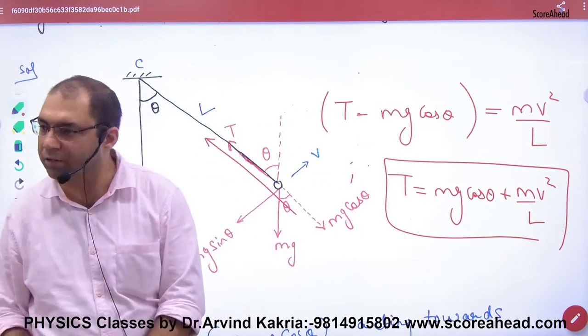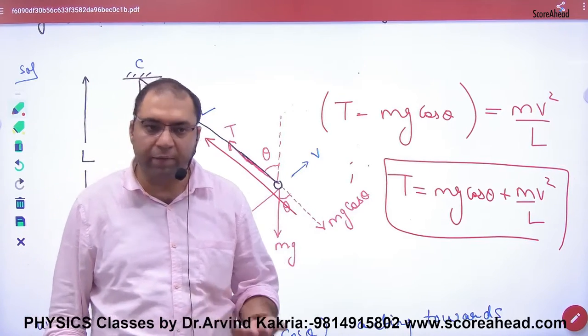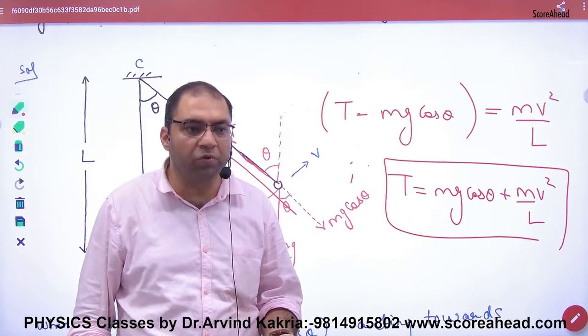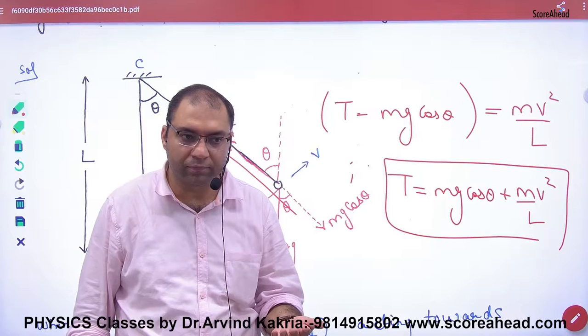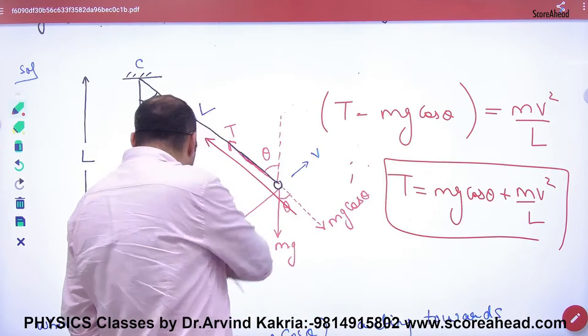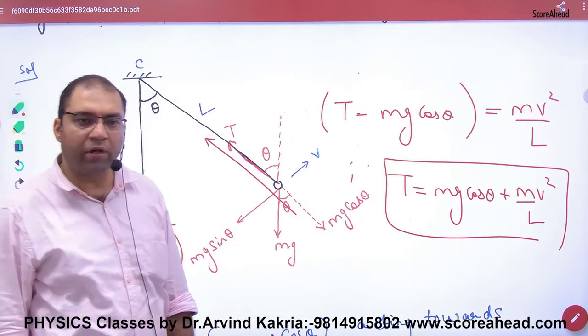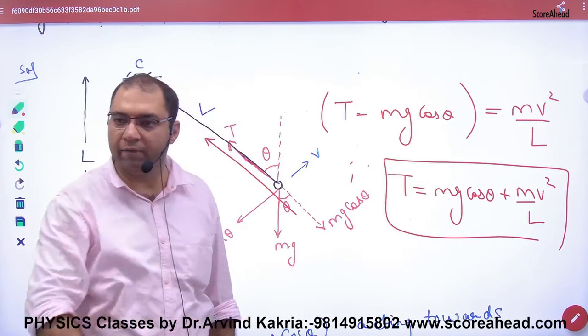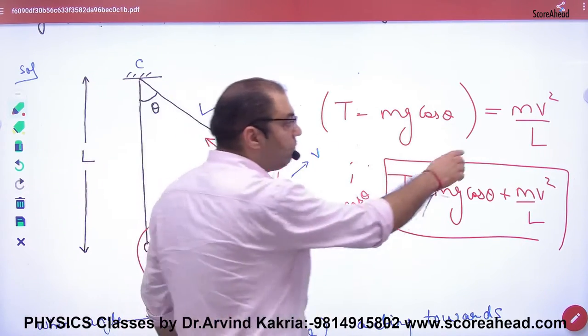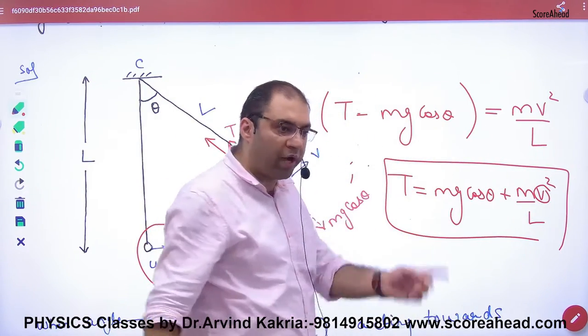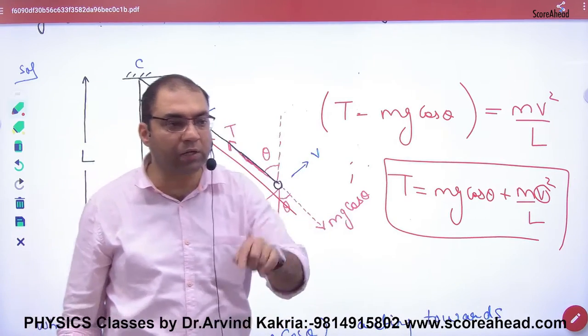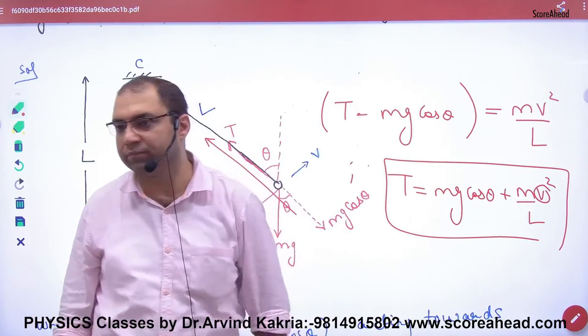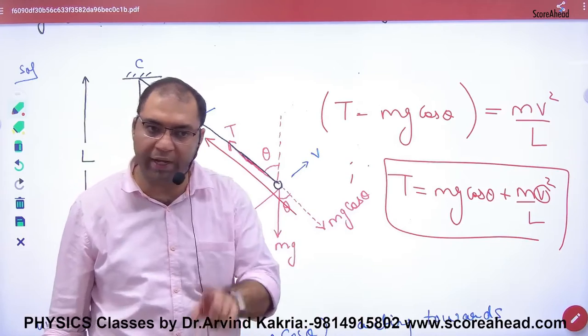But in general, v is not given numerically. You're given u, and you need to find v yourself. If you find v and substitute it, tension will come. In general questions, u is given and you need to find the other velocity.